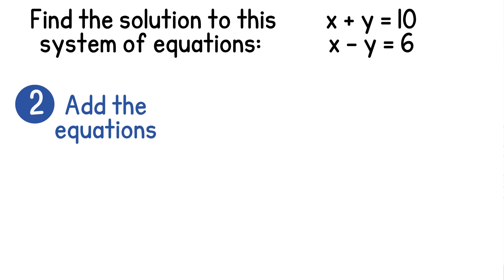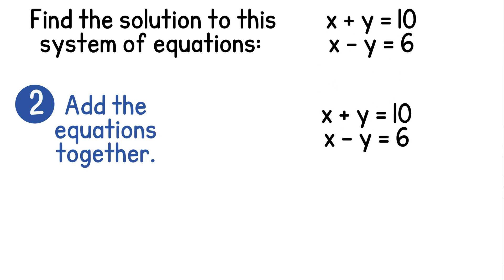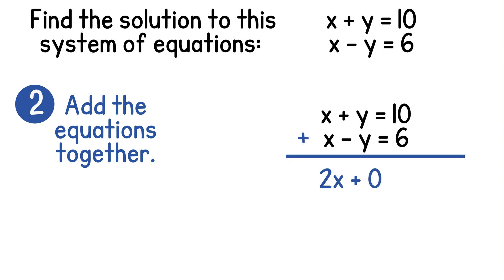Now that we know which variable to eliminate, we can add these equations together. We'll bring our system down and add all of the like terms separately. We'll get 2x. Adding y and negative y will give us 0, which eliminates the y variable. And adding 10 and 6 will give us 16 as a constant.